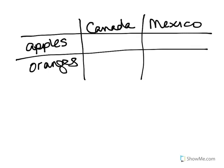Let's say Canada devotes all of its resources just to apple production — Canada would be able to produce 20 apples. Yet if they allocate all of their resources to orange production, they can produce 15 oranges. Then we look at the same information for Mexico: if Mexico only produces apples, they can produce 25 apples; if they only produce oranges, they can produce 10 oranges.